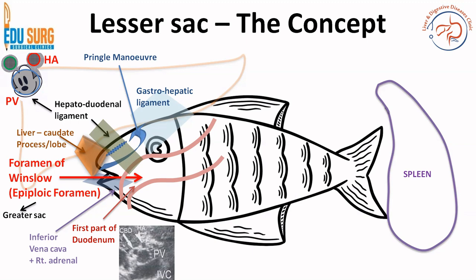The lesser sac, just like a fish which has only one opening, also has only one opening — which is towards the liver through the foramen of Winslow — where it communicates with the greater sac. The fish analogy helps you understand the different parts of the lesser sac: the superior recess is like one wing of the fish, the inferior recess is another, and the splenic recess is like the tail of the fish. This makes it very easy to understand the superior recess, inferior recess, and splenic recess. There are four important parts in the lesser sac.